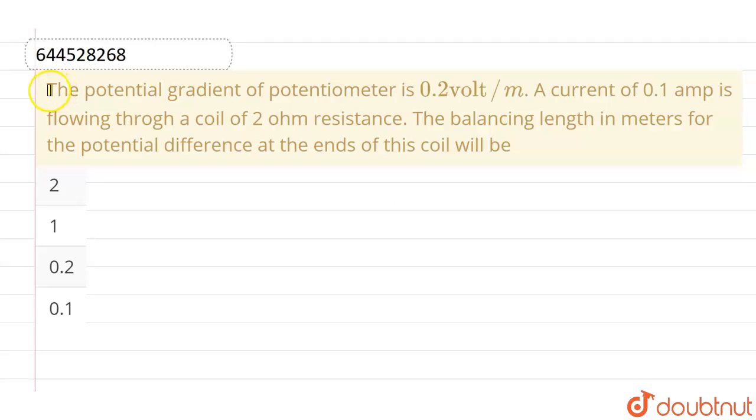Hello everyone, if we talk about this question, the given question is: the potential gradient of a potentiometer is 0.2 volt per meter. A current of 0.1 ampere is flowing through a coil of 2 ohm resistance. Find the balancing length in meters for the potential difference at the ends of the coil.